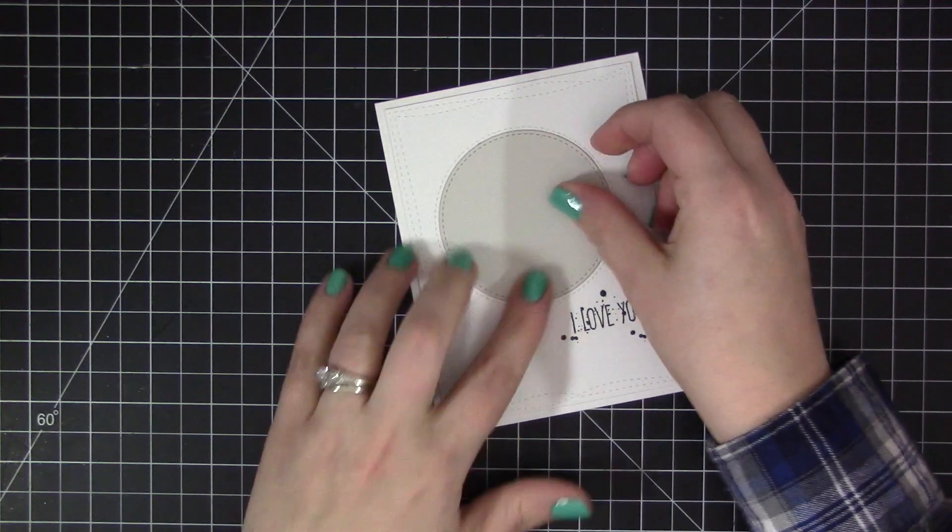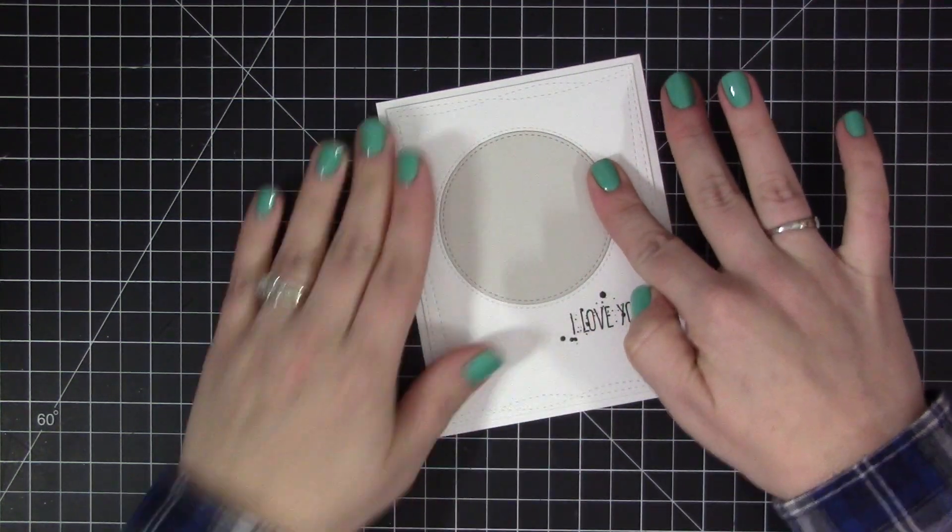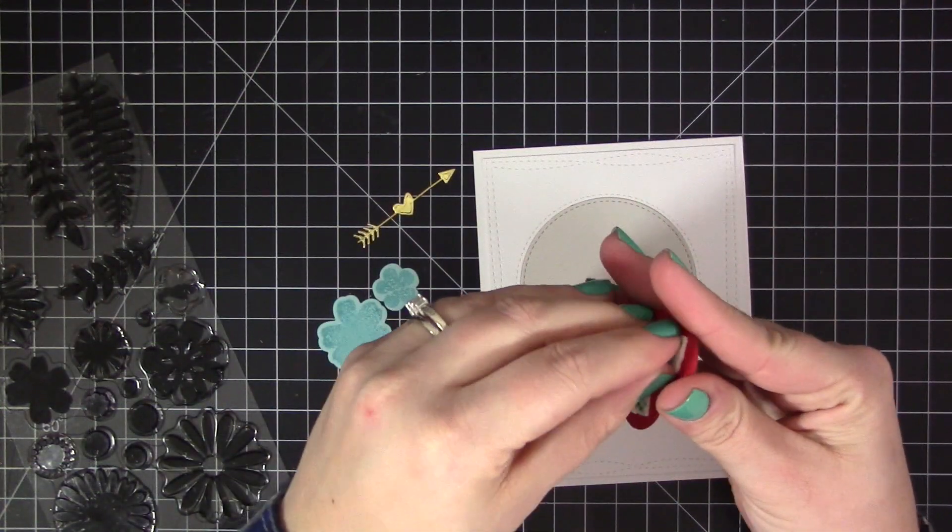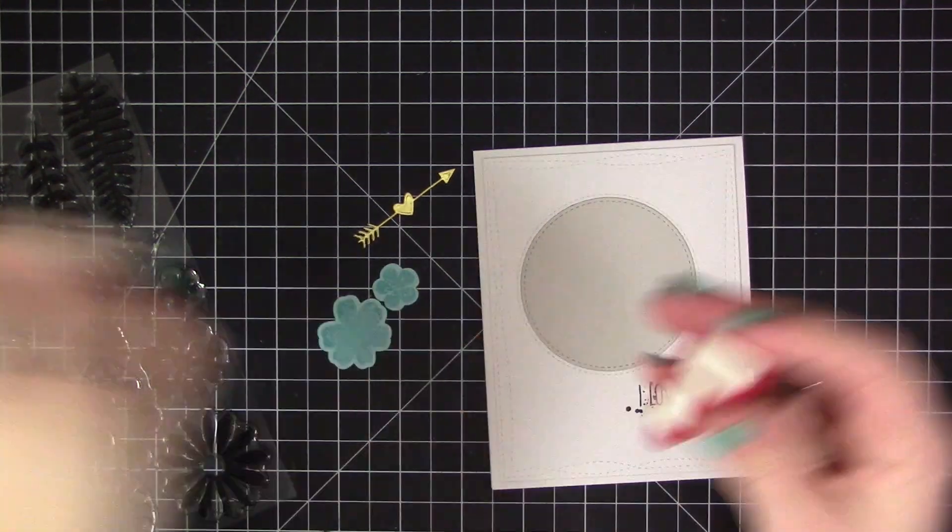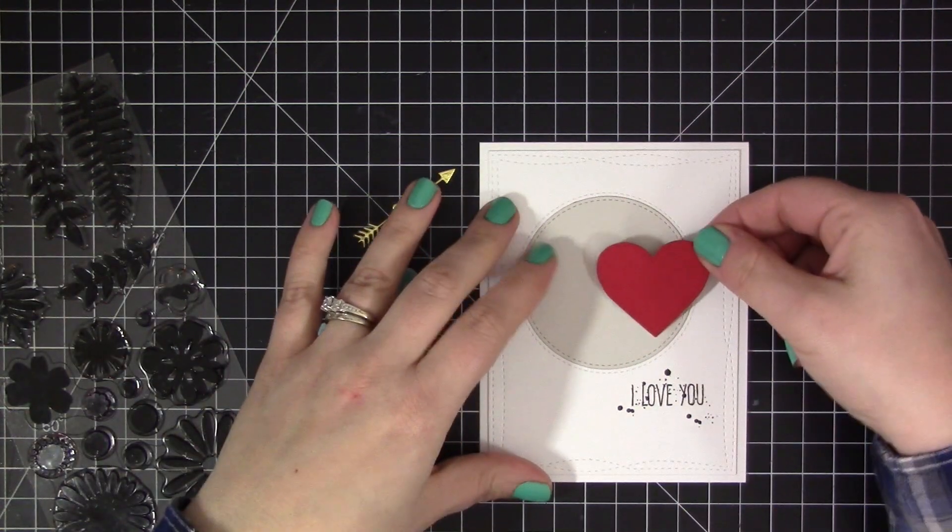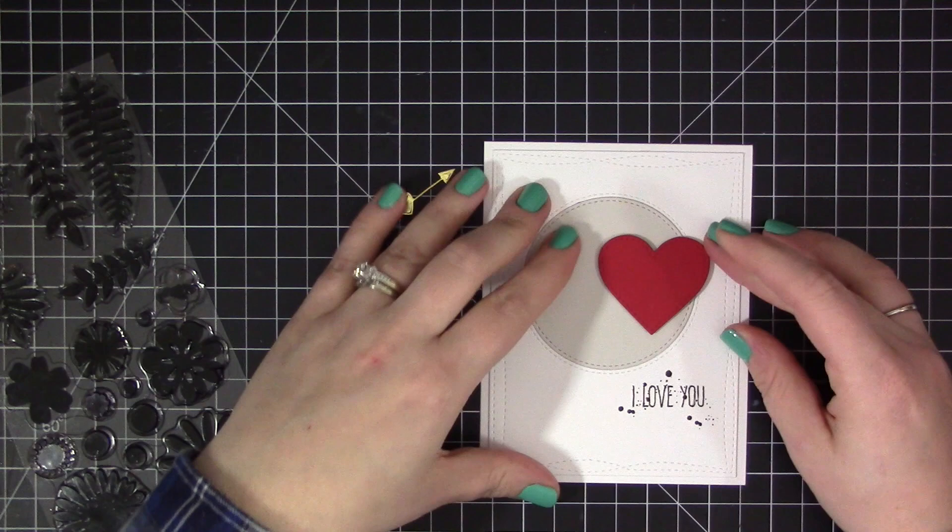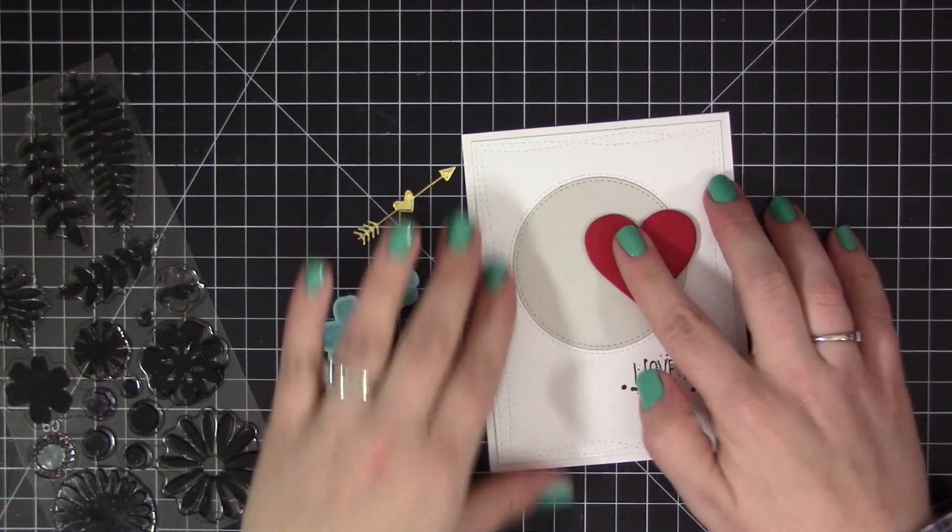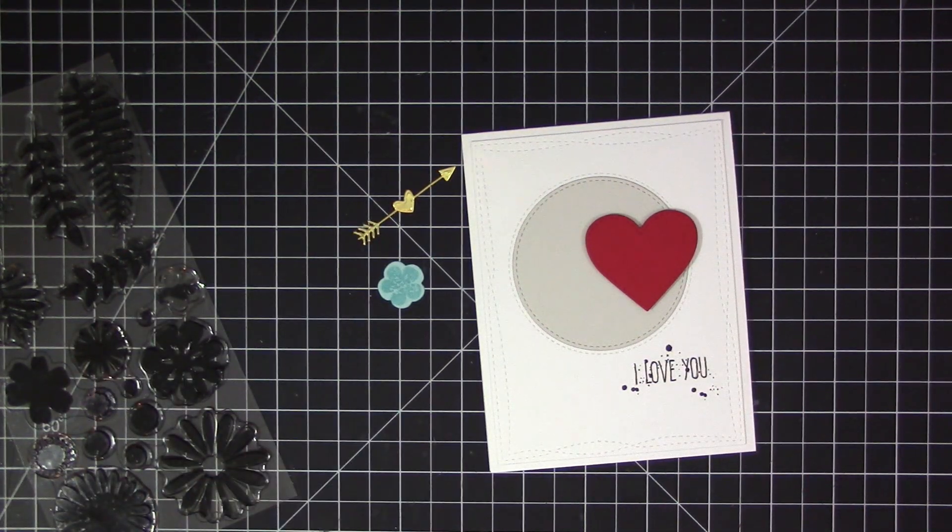Now I'm going to adhere everything to the card. The first thing I'm adding is a circle that I've die cut from the same Circle Stacks dies. I used Grout Gray ink for contrast in color and adhered that directly inside the negative die cut piece. Now I'm adding a red heart that I've die cut from Wild Cherry cardstock using the Stitched Heart Stacks dies.